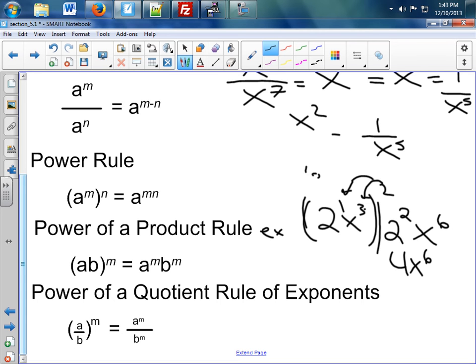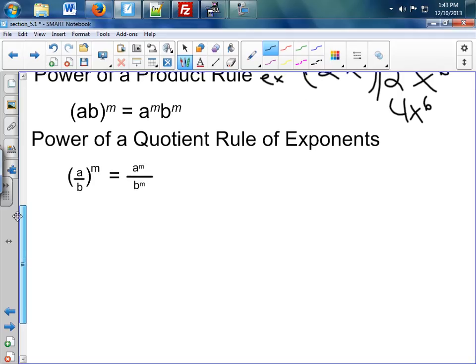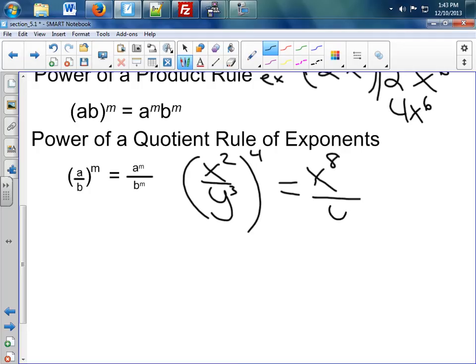And the last rule we're going to talk about today is the Power of the Quotient Rule. If I have x squared over y to the 3rd and I raise it to the 4th power, I have to multiply both the top and the bottom. So I should have x to the 8th and y to the 12th.